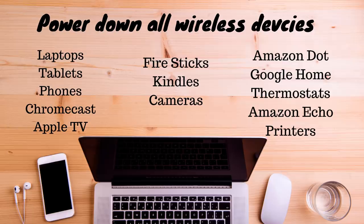Circle makes it easy to rename devices with friendly names, but first you have to identify them. I recommend that you turn off every device you can before putting Circle on your network. Then once the system is set up, you can turn them on one at a time, making it much easier to identify what they are and rename them to something you can remember and identify.